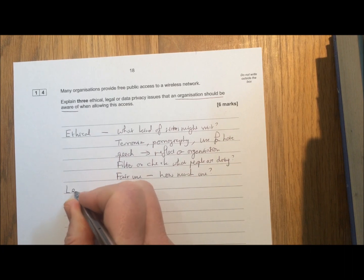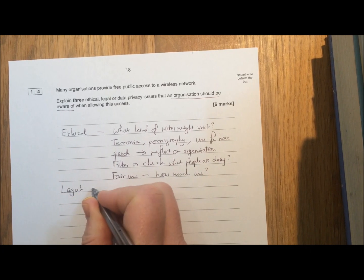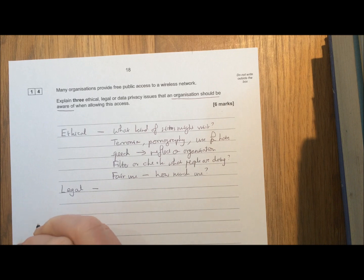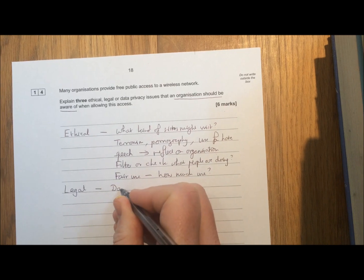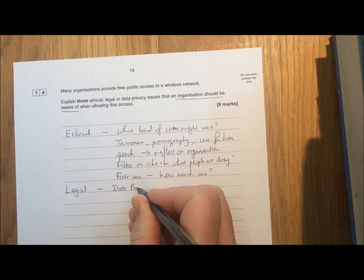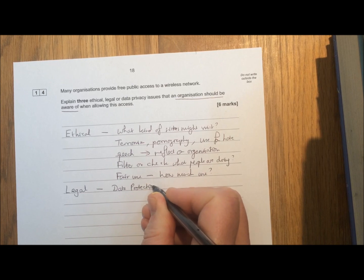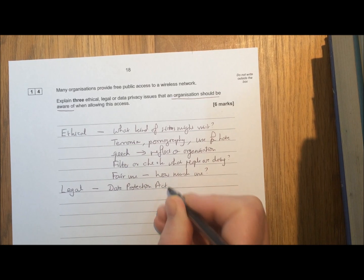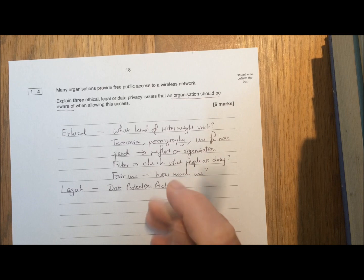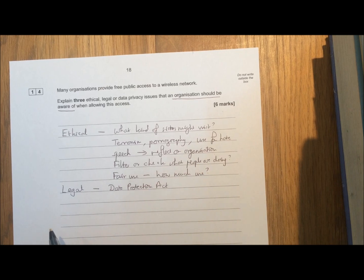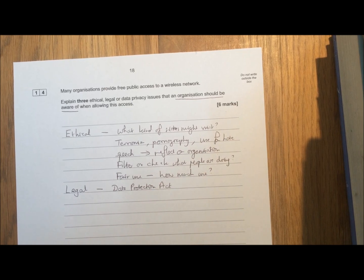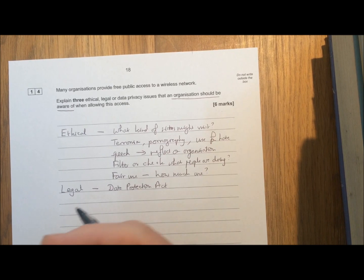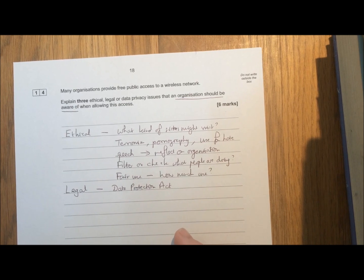Then we can think about the legal aspects. It's a good idea to remember the names of laws at this point. You might want to think about the Data Protection Act. As people use the system, they're going to be putting some of their data on. They'll be entering their passwords or going on and putting their thoughts onto social media sites.